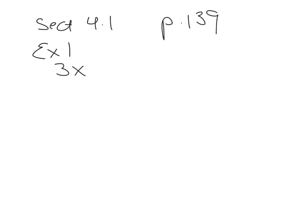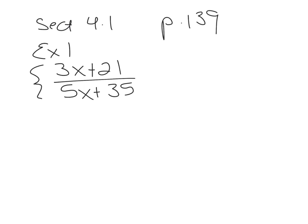It says 3x plus 21 over 5x plus 35. This is an example of what a rational expression looks like. Rational is just a fancy word for fraction. A rational expression has an algebraic expression in the numerator and the denominator. To simplify — and that's what we're working on right now — simplify means to reduce.